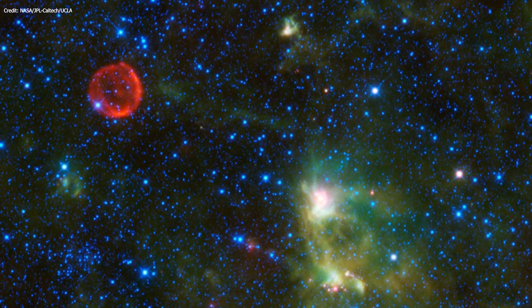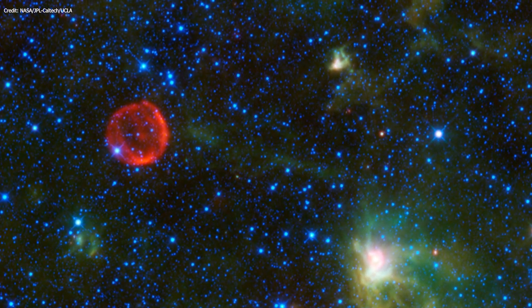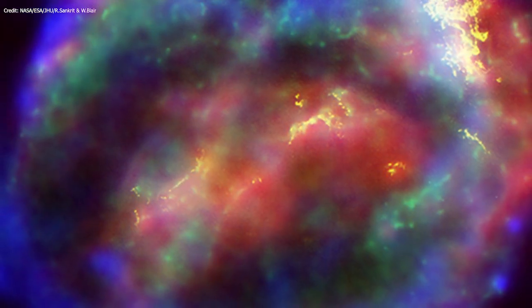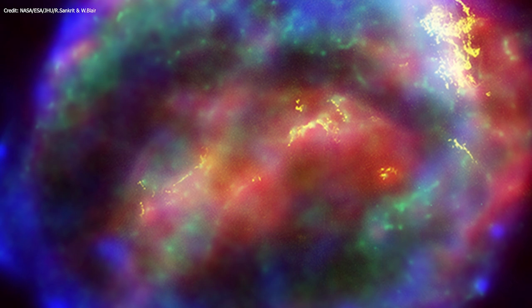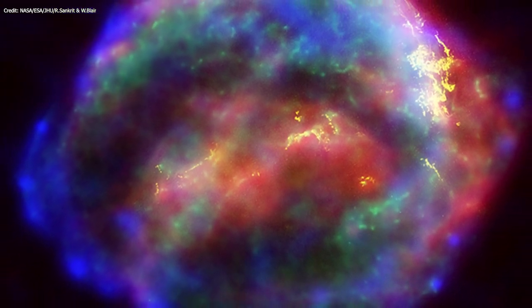This object continues to puzzle astronomers to this day. That's because SN 1572 looks different from other supernovae. It's all clumpy and lumpy, but astronomers are using simulations to figure out how it got that way.